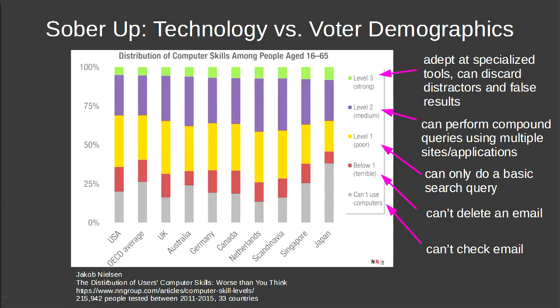This graph comes from surveying 200,000 people between 2011 and 2015. The gray area represents people who basically can't use computers — can't check email. Red are people who can't delete an email. Yellow are people who can only do a basic search query. Purple are people who can use multiple sites and compile information. Green are the very few who can script, scrape sites, and filter fake reviews.